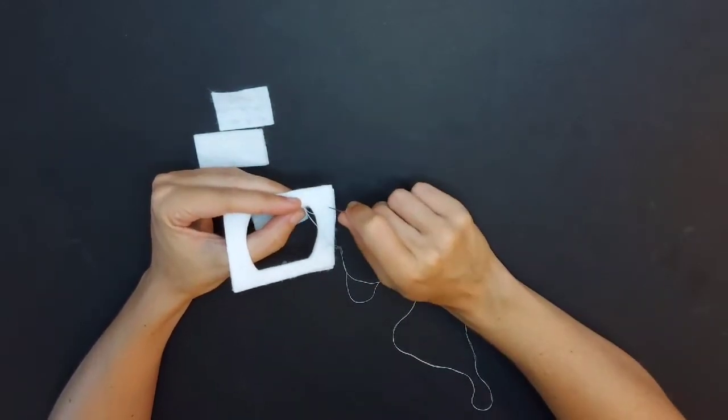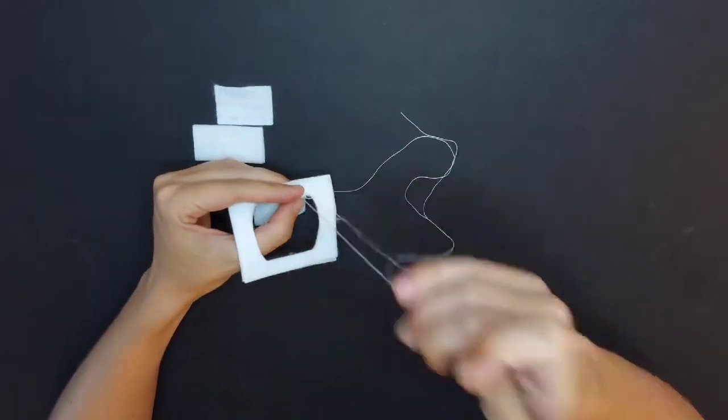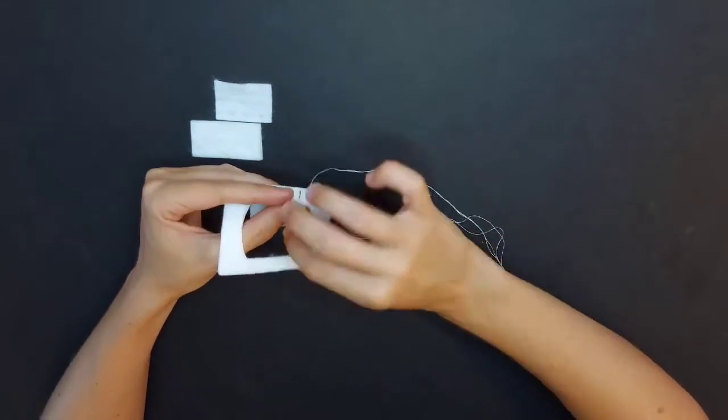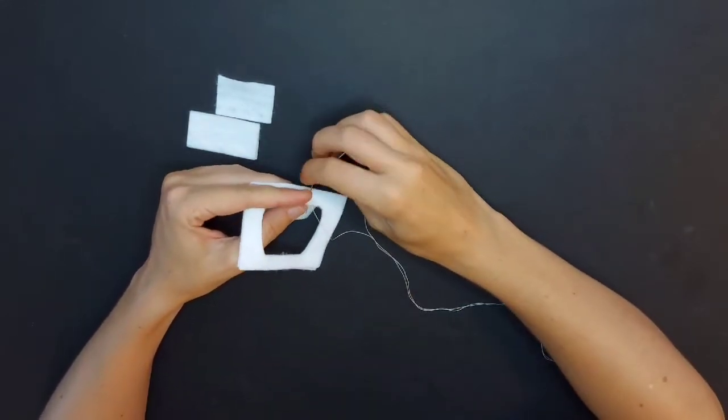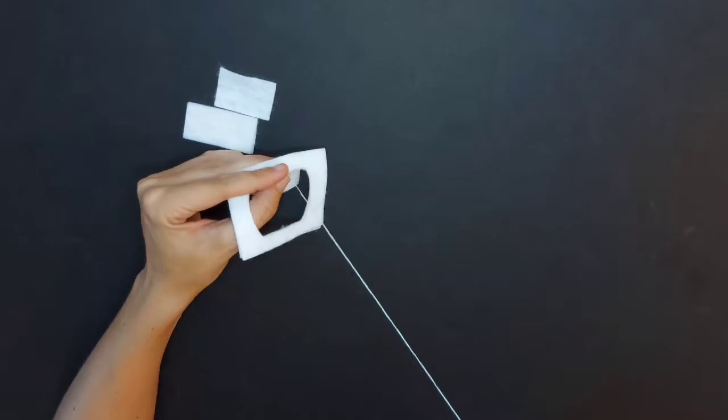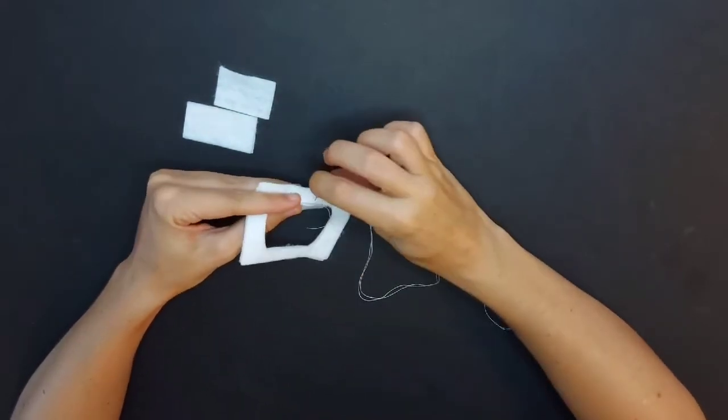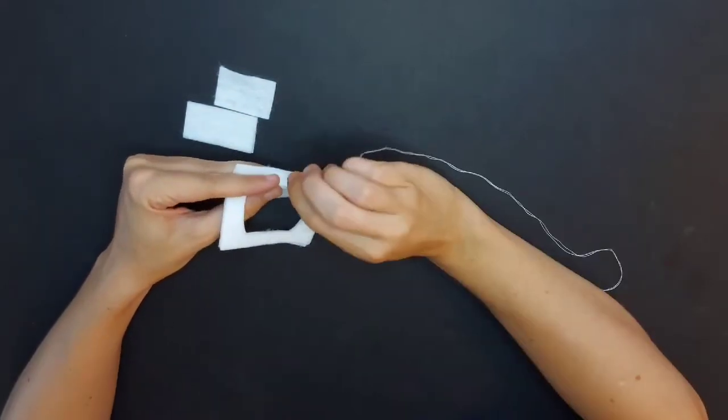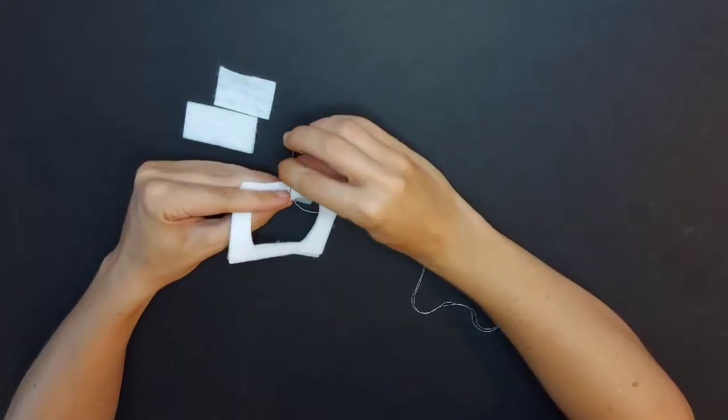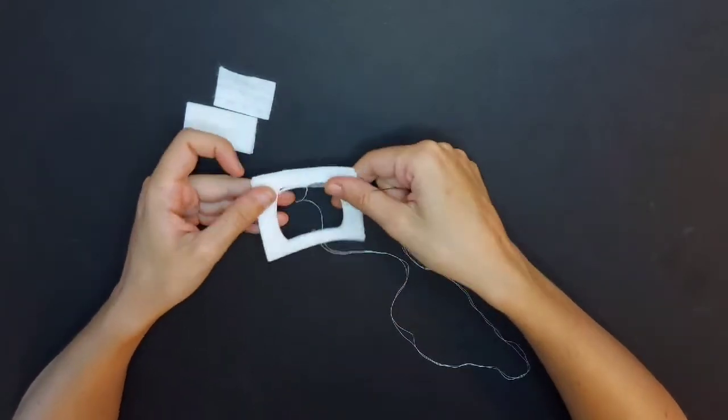You'll want to make sure to get all three layers when you're sewing this, because there's two layers of the square top bit and then the one side. Just whip stitch all the way along and continue going to attach the other three pieces.